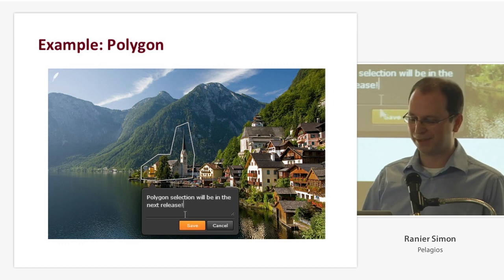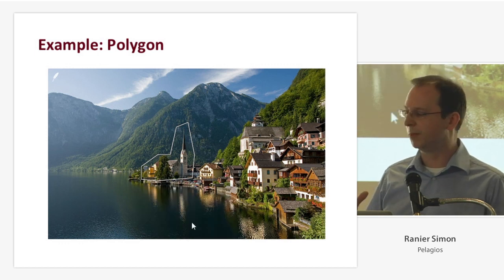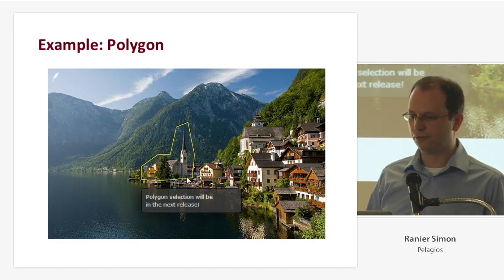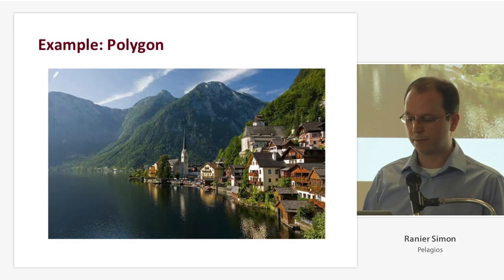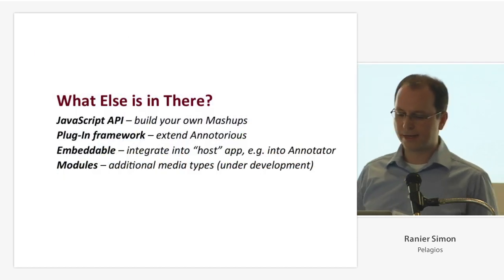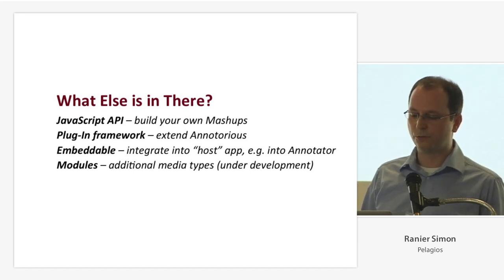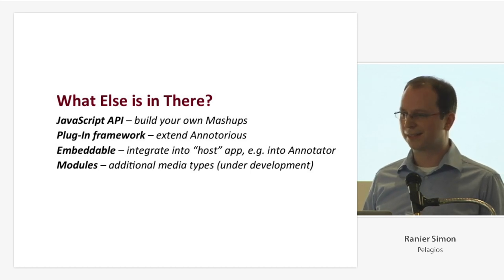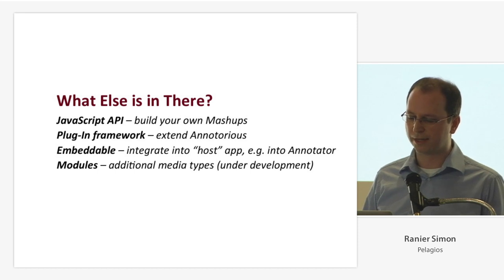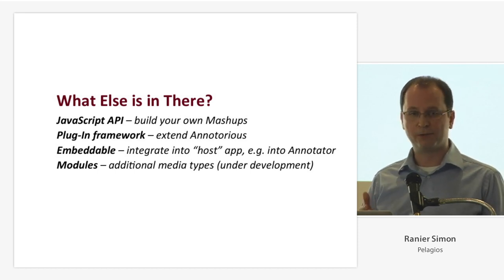In one of the next releases — not necessarily the next one, because the next one is probably going to be focused on zoomable images, which is also a key feature for Maps. So you can have those zoomable images and the annotation attaches to the zoomable image. It has a JavaScript API to build your own mashups, it has a plugin framework so you can extend Ennotorious. Being a library, it's by definition embeddable, so there's also code that embeds Ennotorious seamlessly into Annotator, for example. There's a WordPress plugin coming up really soon, and we're also looking into extending it to support other media types — zoomable images, and potentially audio would be interesting.